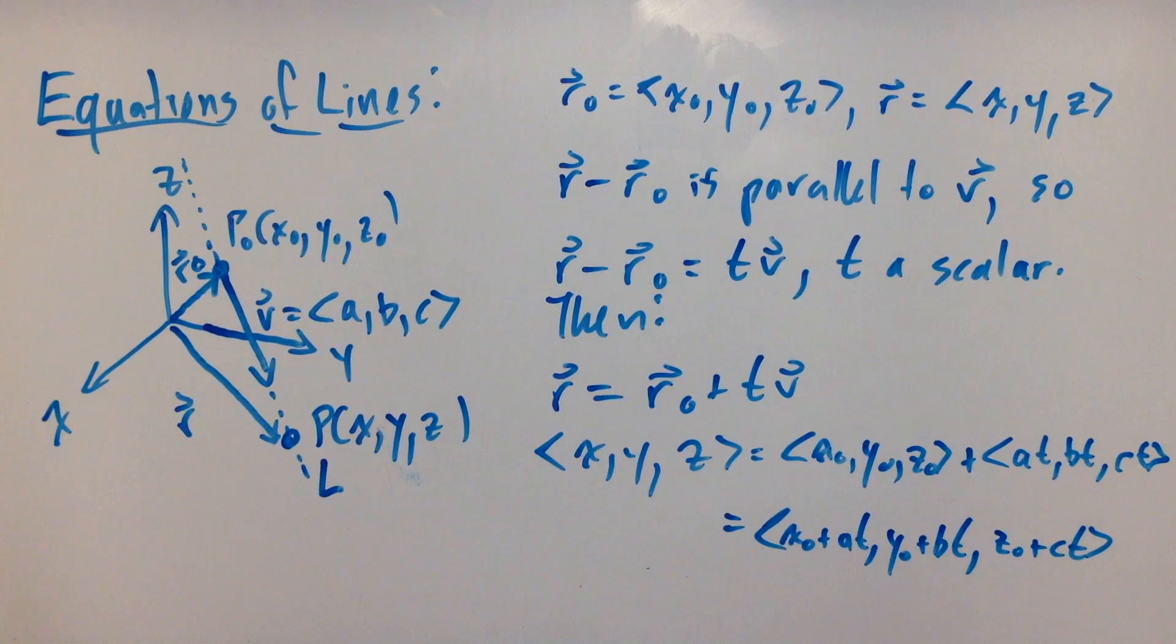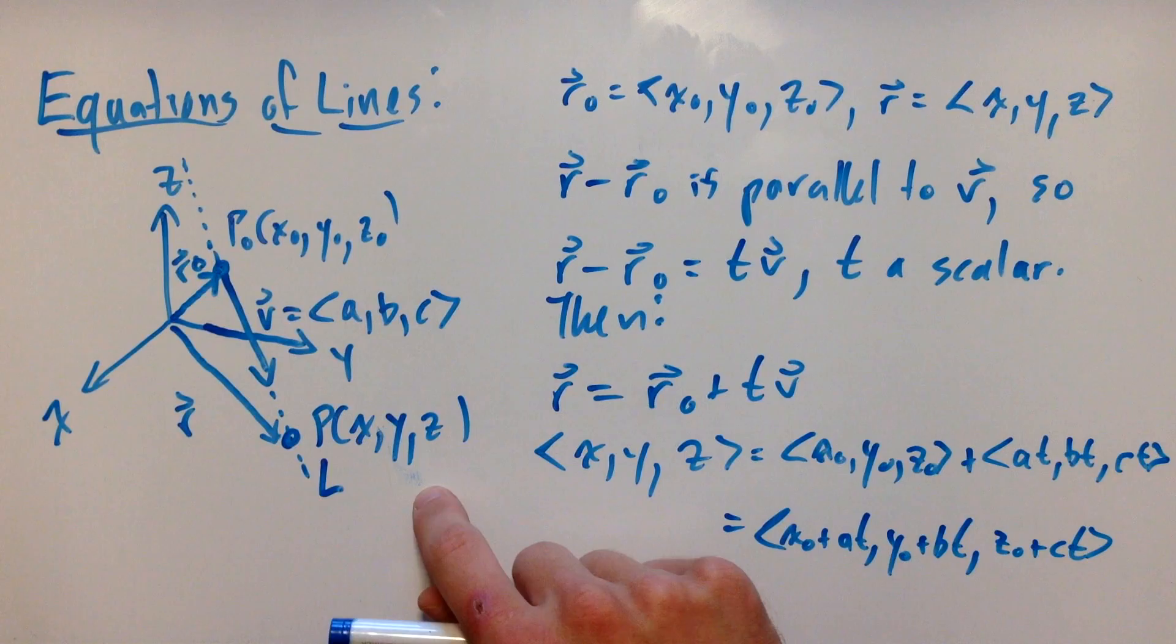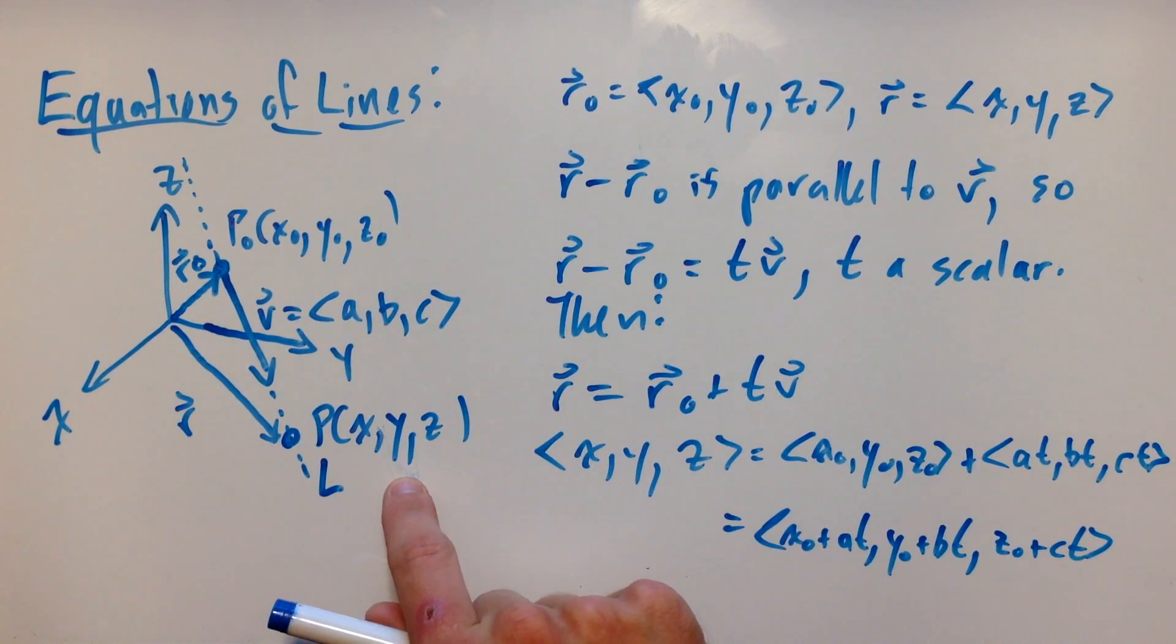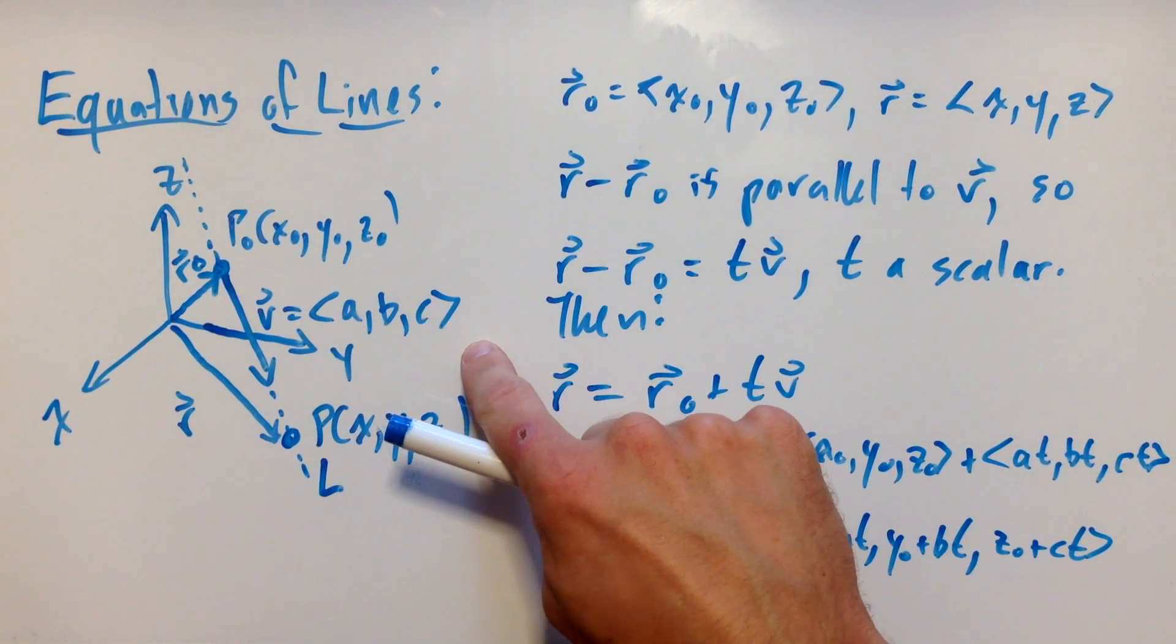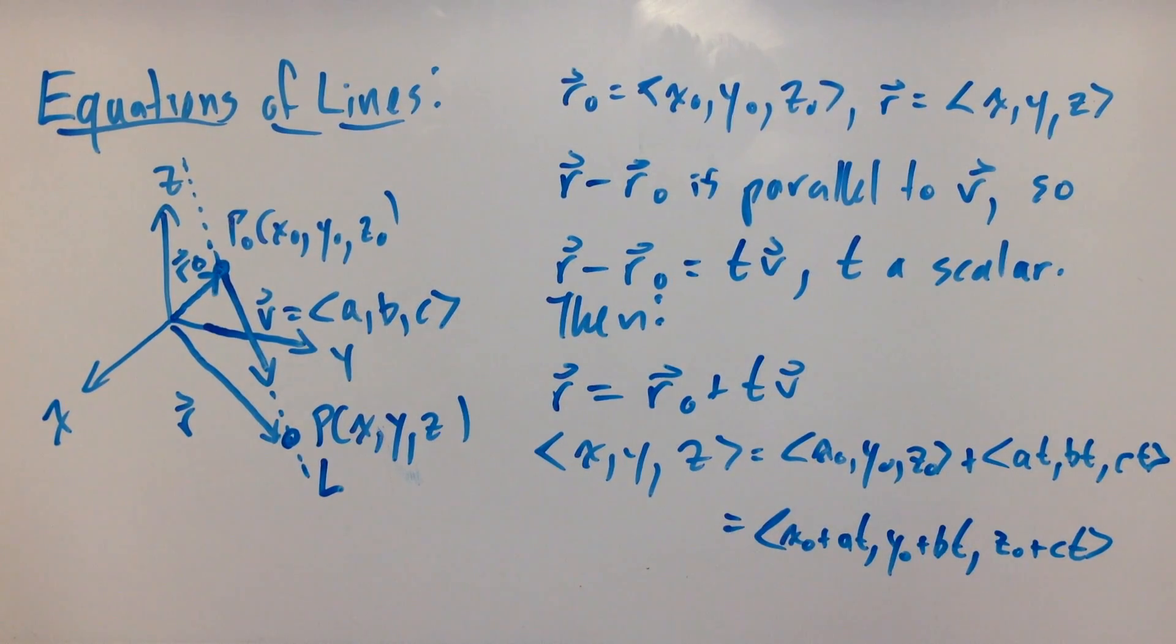Let's start coming up with actual equations for lines. I've made our picture over here a little bit more busy. L consists of a bunch of points p(x, y, z), and I'd like to find a formula for this point p in terms of our given point p0 and our vector v, which I've given components a, b, and c.